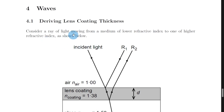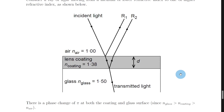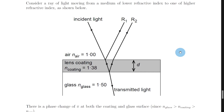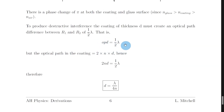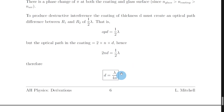To recap: start by considering a ray of light moving from a medium of lower refractive index to one of higher refractive index. Sketch the diagram showing air, the lens coating, then glass, with refractive index increasing as we go into the materials. The light reflects off the first surface as R1, is transmitted into the coating, and reflects off the second surface as R2. Both rays undergo a phase change of pi radians. For destructive interference of the reflected light, the coating thickness must create an optical path difference of half a wavelength between R1 and R2, so we write optical path difference equals lambda over 2. The optical path difference also equals 2nd, so 2nd equals lambda over 2, and rearranging gives d equals lambda over 4n.